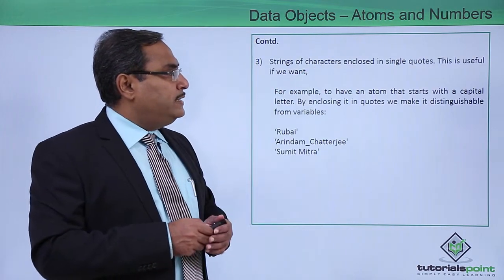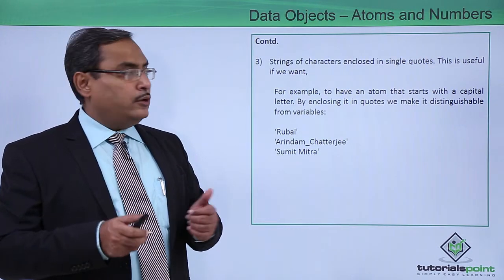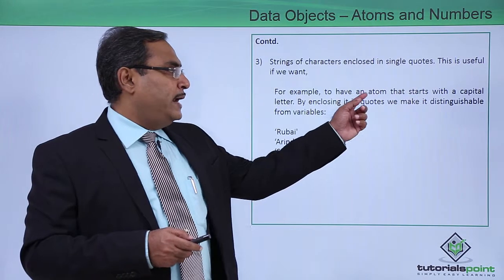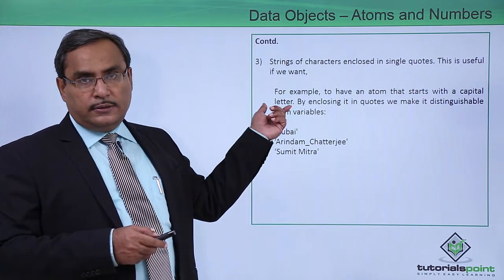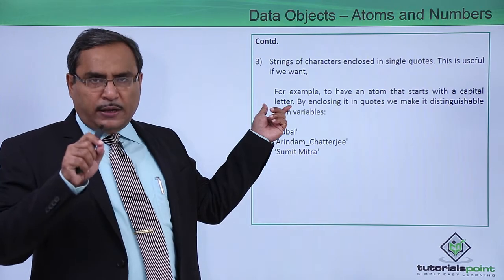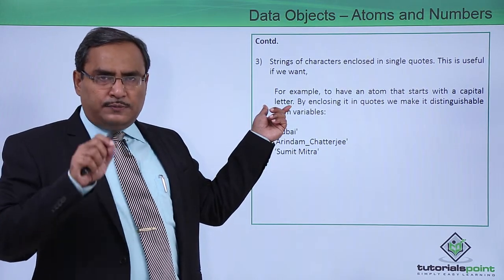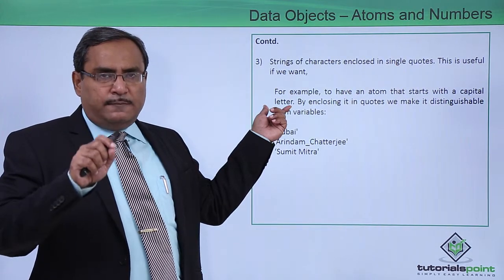Strings of characters enclosed in single quotes can also be treated as atoms. For example, to have an atom that starts with a capital letter, we know that whenever we start something with a capital letter, that will be denoted by a variable. So variable comes with the first letter in capital.